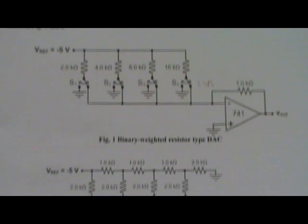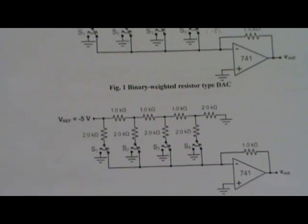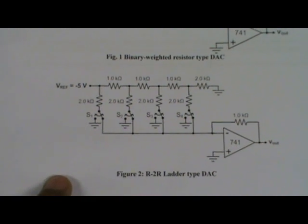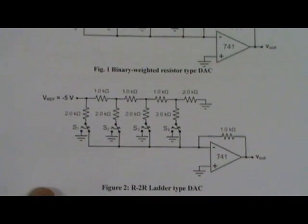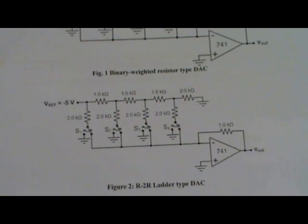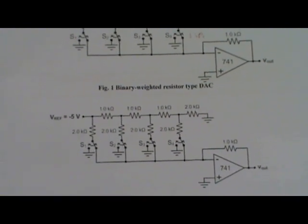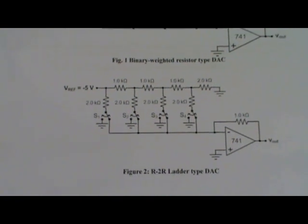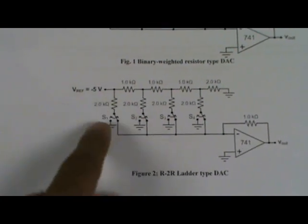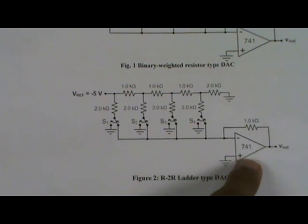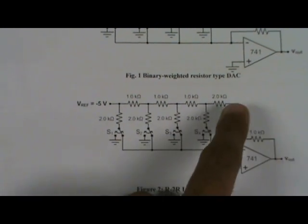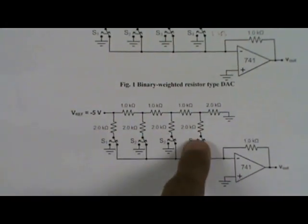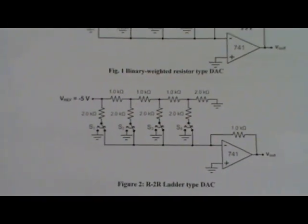Figure number 2: To overcome the limitations we will design R-2R ladder type DAC, which is practically more acceptable and accurate in compare to figure number 1 binary weighted resistor type DAC. So again we will take the inverting amplifier 741 op-amp to design R-2R ladder type DAC circuits.